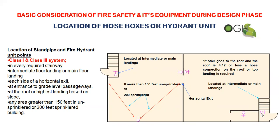Any area greater than 150 feet in a non-sprinkler building or 200 feet in a sprinkler building. We have to set the hydrant point in the stairway. If you have a hydrant point or a hydrant box, the distance will be more than 150. If you have a building that is un-sprinklered, then you can install a hydrant box at 150.